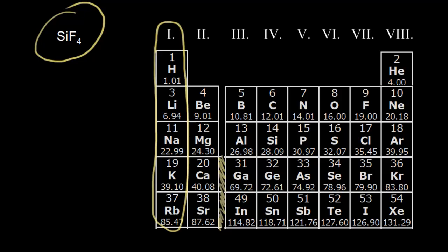Hydrogen has one valence electron. Thinking about the periods: hydrogen is in the first period, or the first energy level. Periods go horizontally across the periodic table. Hydrogen is in group one and has one valence electron. Helium would have two valence electrons. In the first energy level, you can fit a maximum of two electrons. This is important when drawing dot structures, because hydrogen is always going to be surrounded by two electrons, or a single covalent bond.